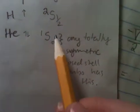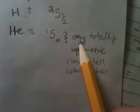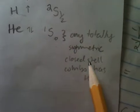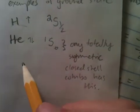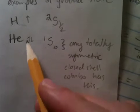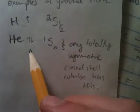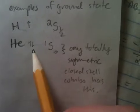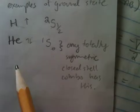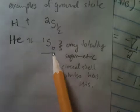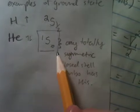Now, this is interesting because this configuration, this 1S0, this is true for any totally symmetric closed shell combination that has this. So, anything that will have a state that has symmetrically, that has these electrons in a symmetric configuration in the closed shell will have this configuration. So, that's interesting for later.